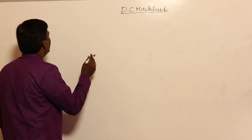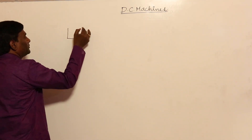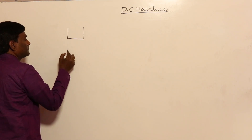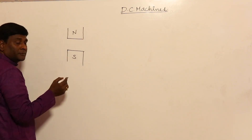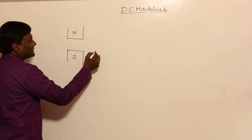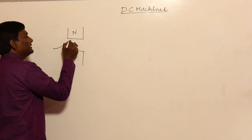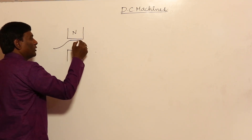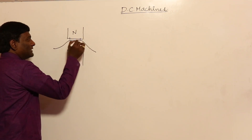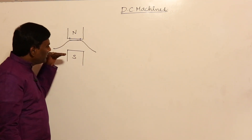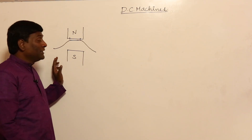For example, if I think of a normal pole — this is N pole, this is S pole — and if you try to draw the flux density, from here it will increase, then be almost constant here (flat top), and then reduce. So flux density at the center of the pole is going to be flat-top.